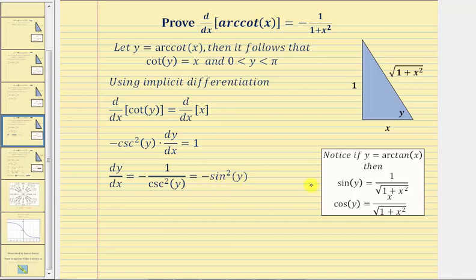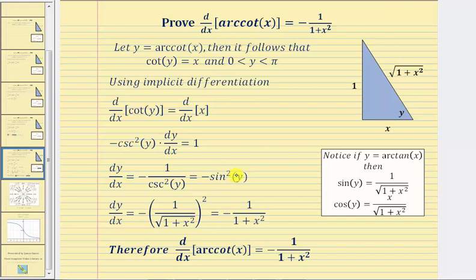Now, because sine y equals one divided by the square root of the quantity one plus x squared, we have dy dx equals — note the negative is outside the parentheses — negative times the quantity one divided by the square root of one plus x squared, all squared, which equals negative one divided by the quantity one plus x squared.